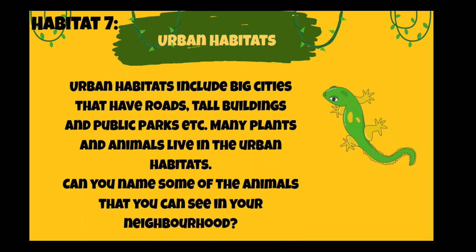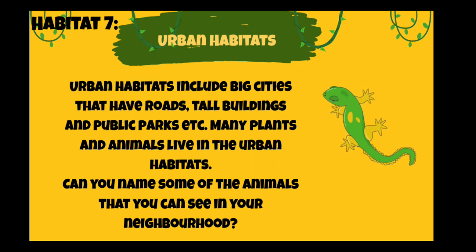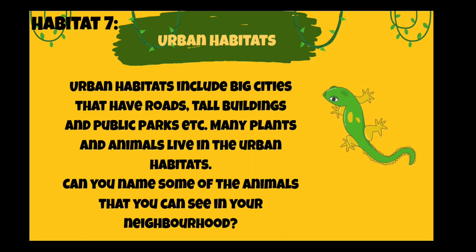Many plants and animals live in the urban habitat. Right now you can listen to the crow, the myna, and the sparrows. Eagles live in the urban habitat. Dogs and cats live in the urban habitat, and mice and rats also live in the urban habitat. You can see all these animals around you — they live in the urban habitat.